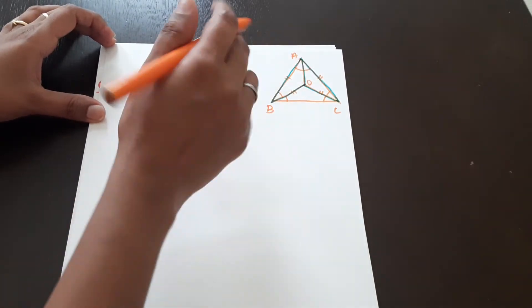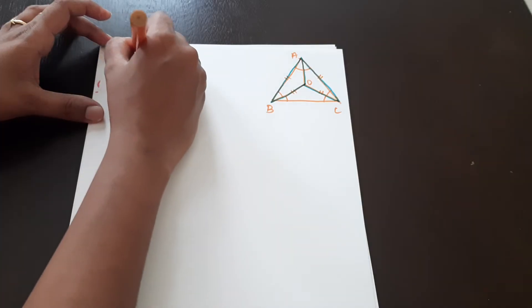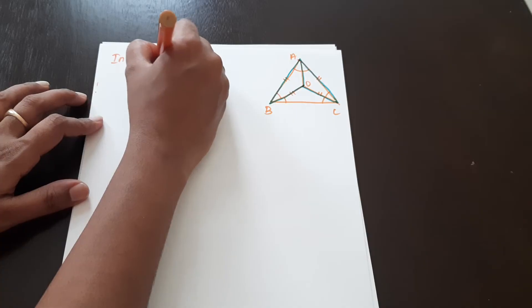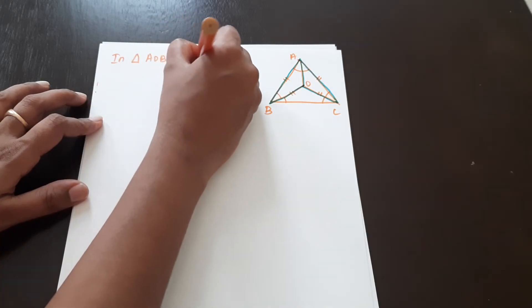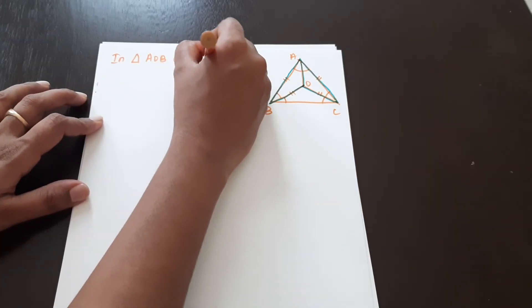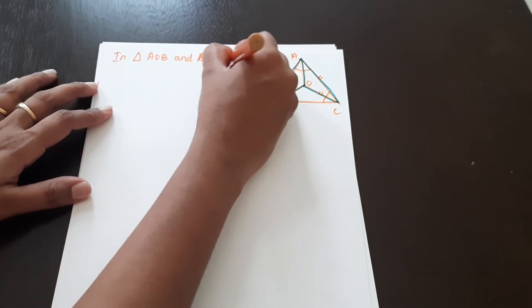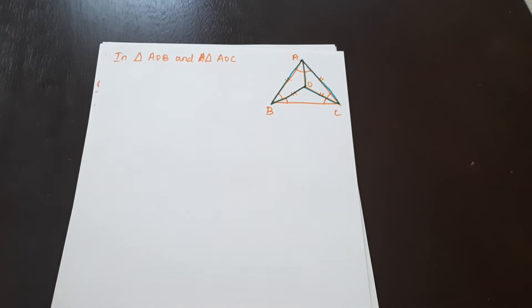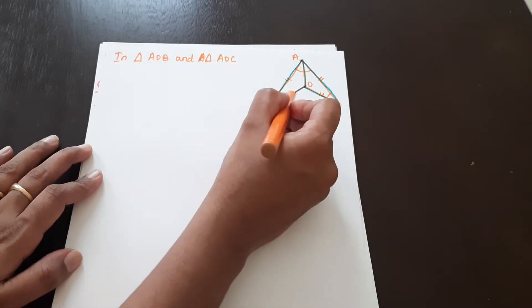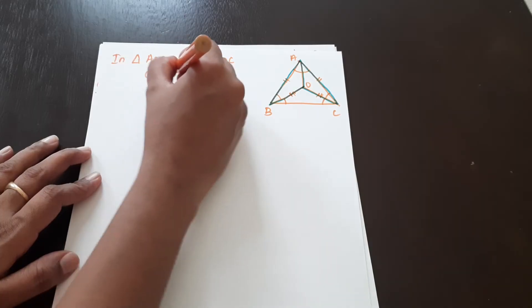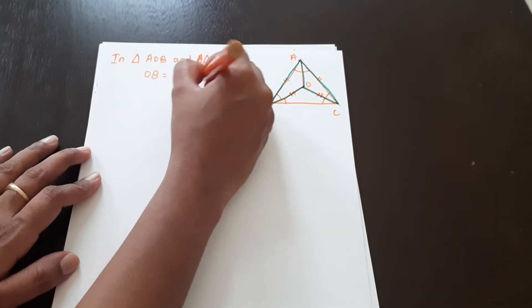So, in triangle AOB and triangle AOC: OB is equal to OC — this we have to prove it. So in triangle AOB and triangle AOC, we list the corresponding sides and angles.